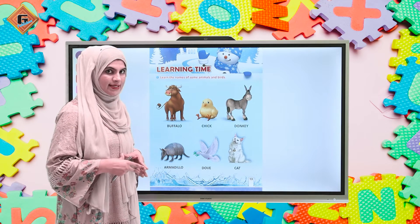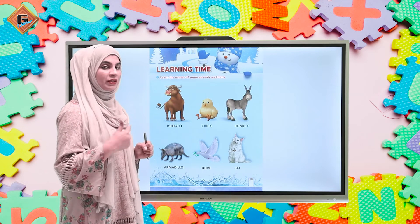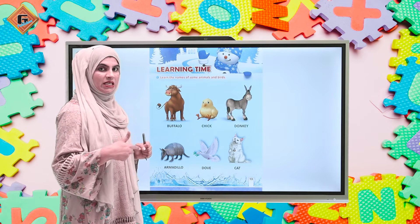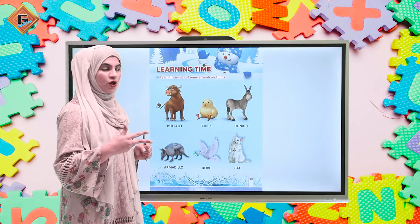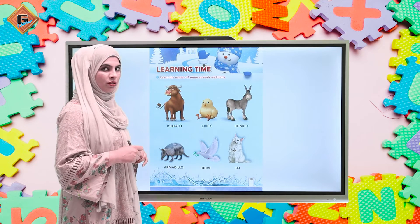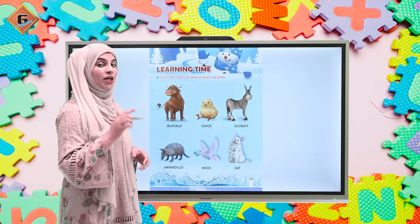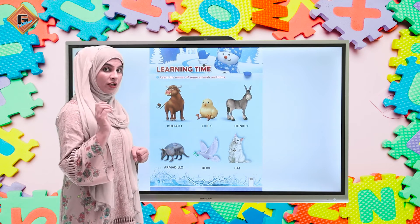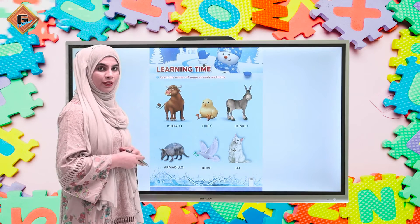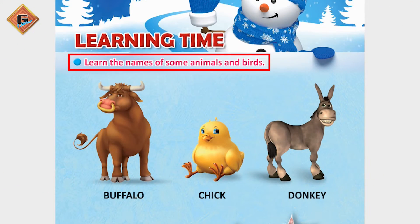Aur aapne is baat ka khayal rukhna hai ki jo letters hum already sikh chukke hai - jaisye ki a, b, c, or d - yeh sab animals aur birds inhi letters se banne waale hai. So aapne note karna hai ki koon sa animal ya bird kis letter se start ho raha hai. Chal yeh dekhte hai, sab se pehle humare paas koon si picture hai?